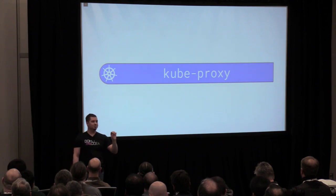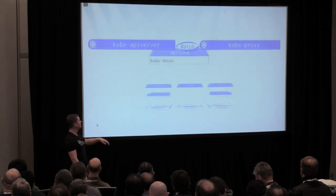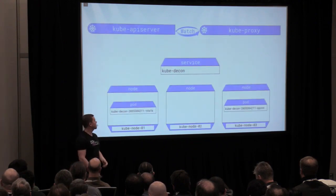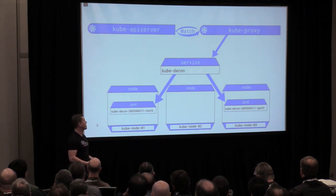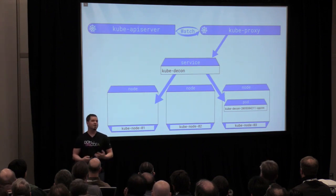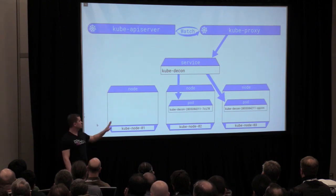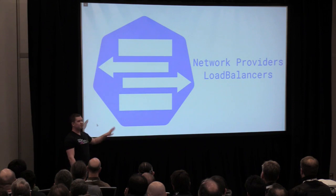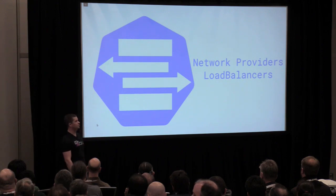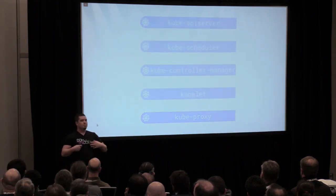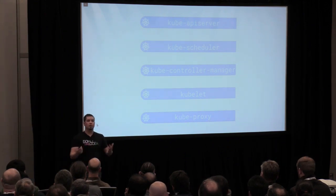Kube Proxy's job is to talk to the API server and make services real. He's constantly watching for all services and on every node, every single service is made real all the time by Kube Proxy. If something changes about the underlying service — a pod changes or goes away — Kube Proxy makes it real. You can completely swap out Kube Proxy entirely. Different network providers do this, load balancing companies do this, it can be done with just Linux kernel features. That's the magic behind Kubernetes and where everything goes and how it all works.